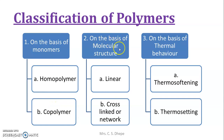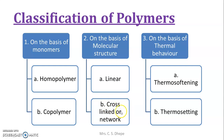Second, on the basis of molecular structure, which we also covered in the previous video, there are two types depending upon structure. One is linear — in linear structure the monomer has only two side linkages. The other type is cross-link or network, where the monomer has three side linkages, and because of three side linkages they form a network-like or cross-link structure.